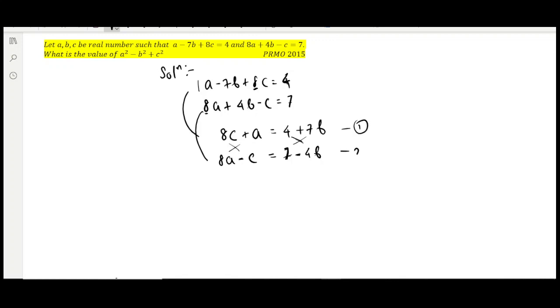Squaring and adding because when we square it, squaring and adding, 8c square, 8a square—8 square will get common. So if we square it and add, the 2ab term will get cancelled.